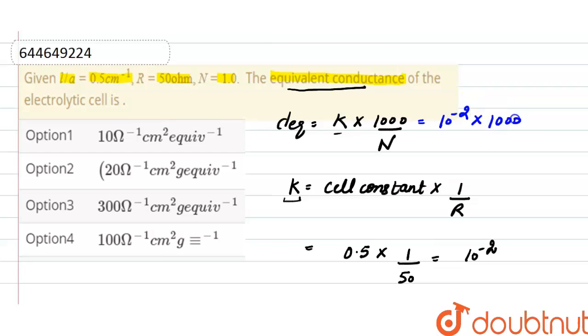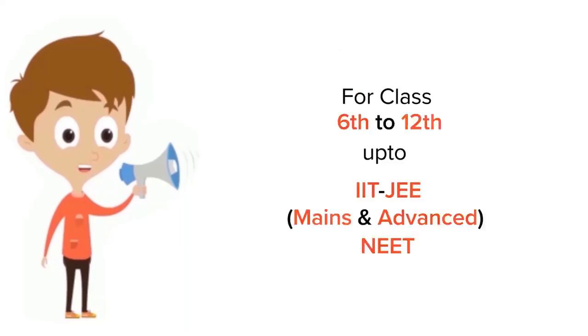So from here, equivalent conductivity is 10, and the correct option here is option 1, in which the equivalent conductivity of the solution is 10 per ohm centimeter square per equivalent.